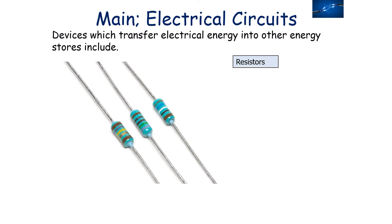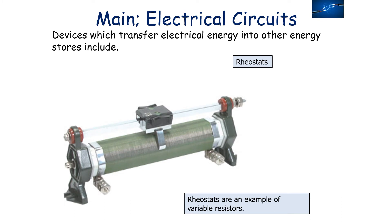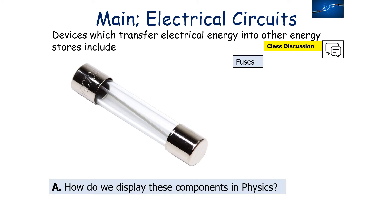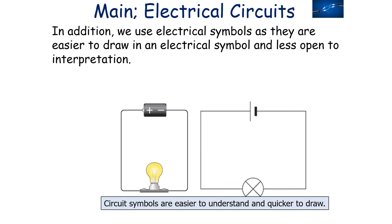Devices which transfer electrical energy into other energy stores include resistors, light bulbs (sometimes called filament bulbs), rheostats (which are variable resistors), and fuses. We represent these electrical devices with electrical symbols so they can be understood all over the world when drawn in diagrams, irrespective of the native language of the people drawing them. Circuit symbols are constant over the entire world, easier to draw, and less open to interpretation.